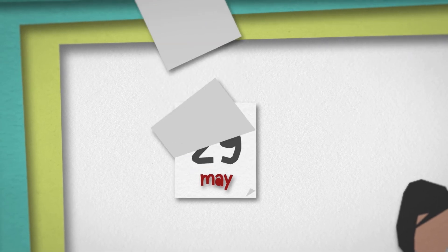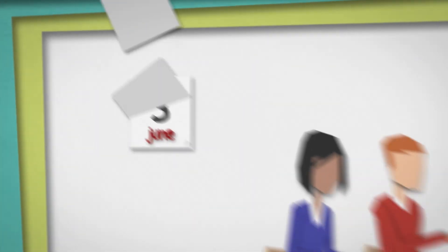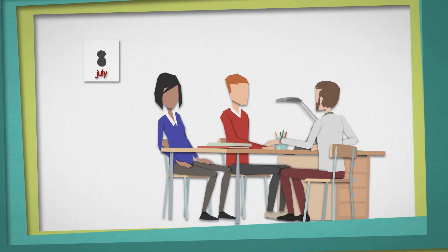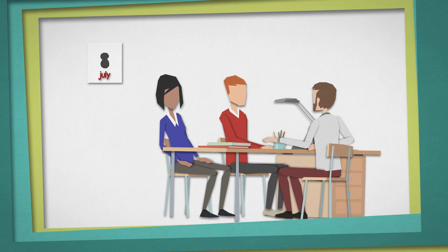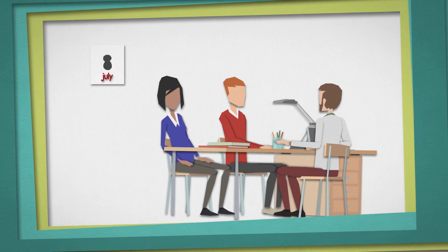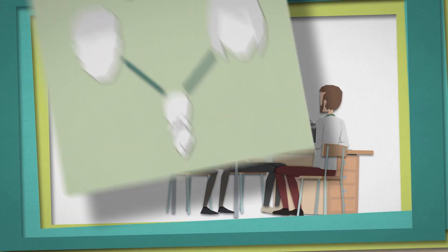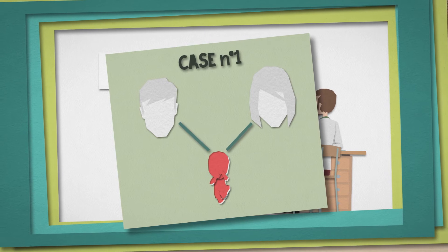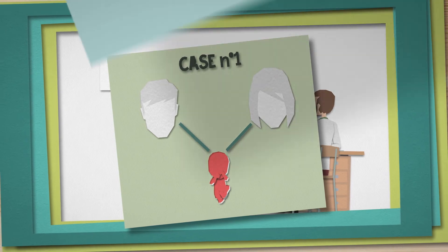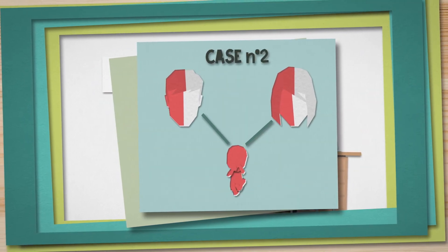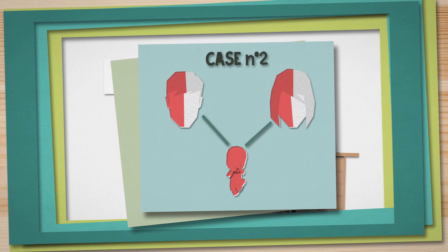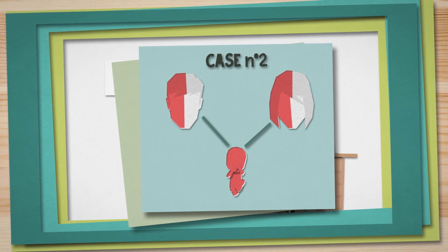Within three to nine months, the genetic results are returned to the couple. They can help to determine the risk of recurrence for a future pregnancy. If the anomaly is present only in the fetus, the risk of recurrence is low. In some genetic disorders, the risk of recurrence may be higher, depending on the disease.